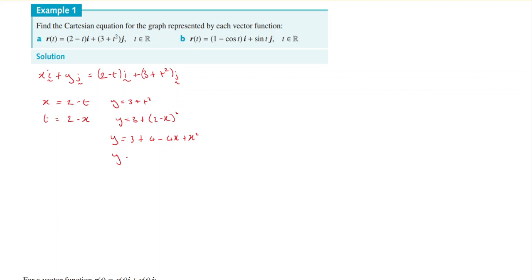Squared the last one plus x squared. Neaten it up a little bit to get it into a nice little form. So y equals x squared minus 4x plus 7. And that's a Cartesian equation. Now note, you can also get the domain and range from the x and the y.